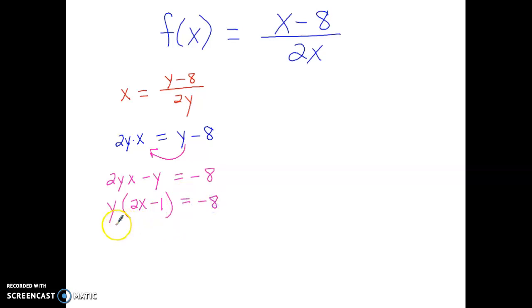My last step would be to divide both sides by that quantity. These ones divide out. So my inverse function would be negative 8 over 2x minus 1.